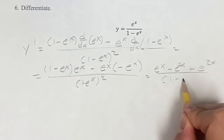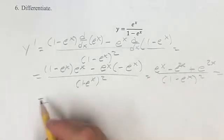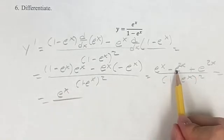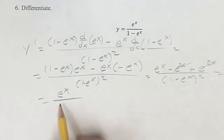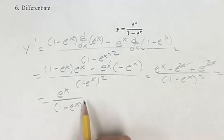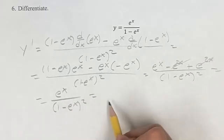This is over 1 minus e to the x squared. One last step: these terms will cancel out, and we're left with e to the x over 1 minus e to the x squared. This is your derivative.